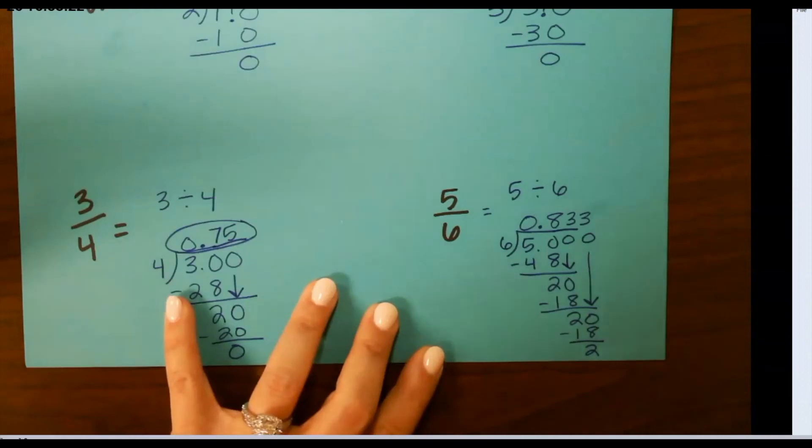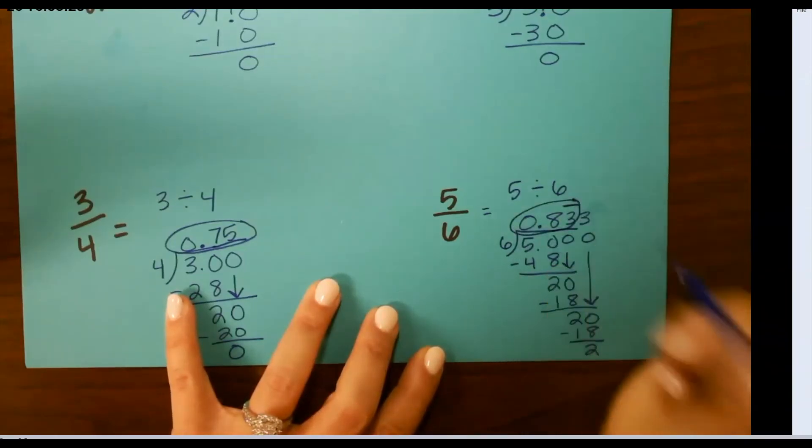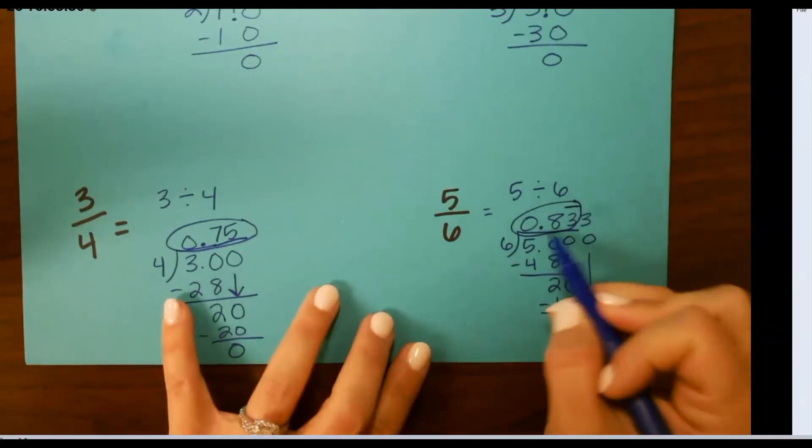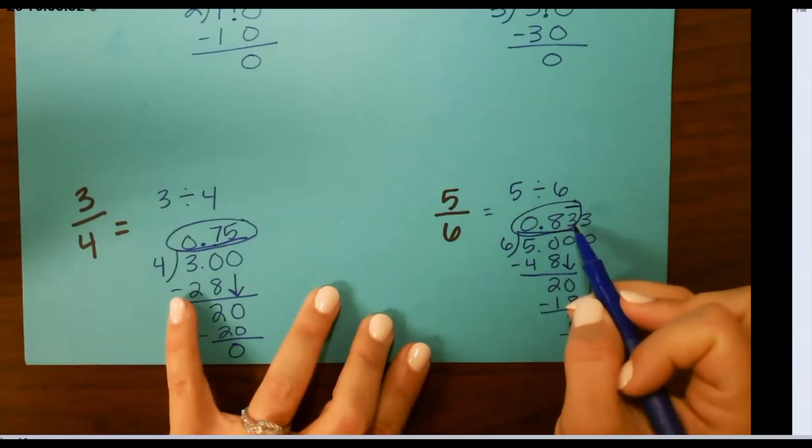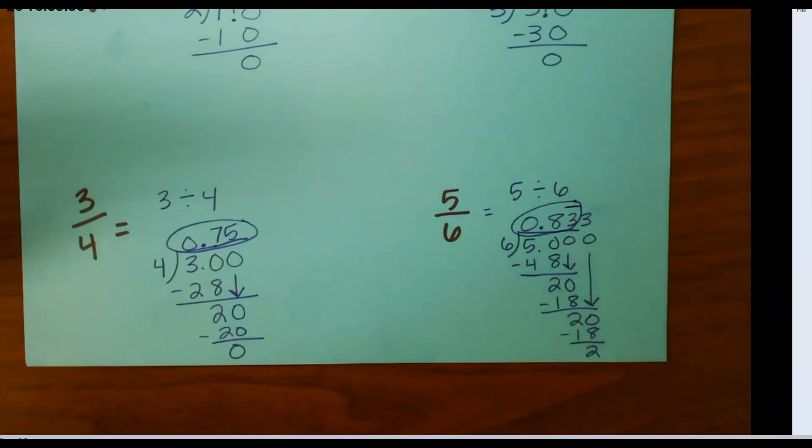You will notice a pattern. If this continues to happen, that means the 3 is going to repeat, so you can put a bar over the 3 to show that my decimal would be 0.83 repeating. Since the 3 is the only number that repeats, you just put the bar over the 3.